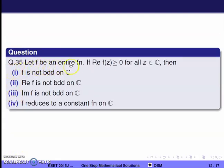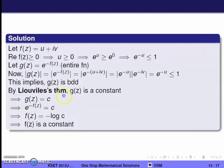Next question, question 35. Let f be an entire function. If Re(f(z)) ≥ 0 for all z, then what can we conclude? Since Re(f(z)) = u ≥ 0, we have e^u ≥ e^0 = 1, so e^(−u) ≤ 1. Define g(z) = e^(−f(z)). This is an entire function since the exponential of an entire function is entire.